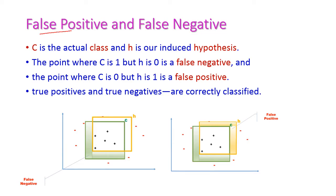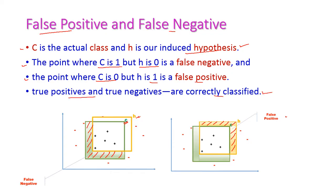Now let us see false positive and false negative. C is the original actual class and H is the hypothesis class our machine trained. The point where C is 1 but H is 0 is false negative — this region is false negative. The point where C is 0 but H is 1 is false positive — this area is false positive. The true positive and true negative are correctly classified. The inside area is true positive and the outside is true negative.